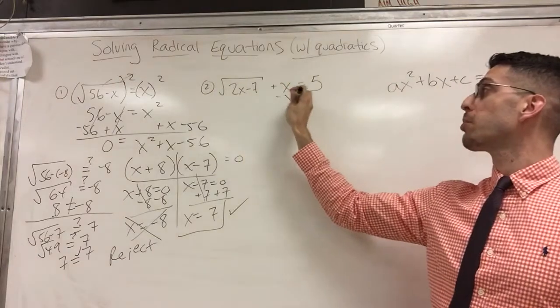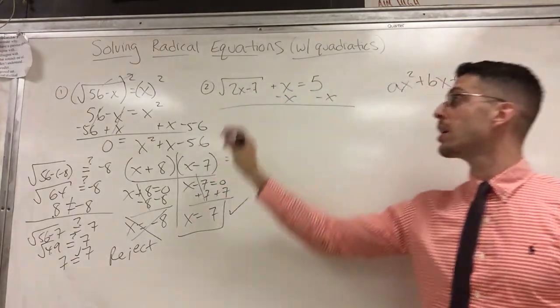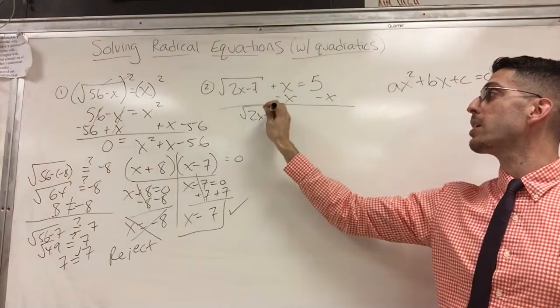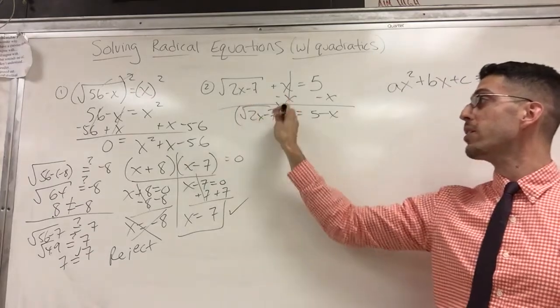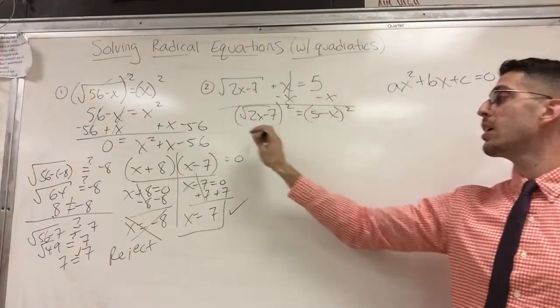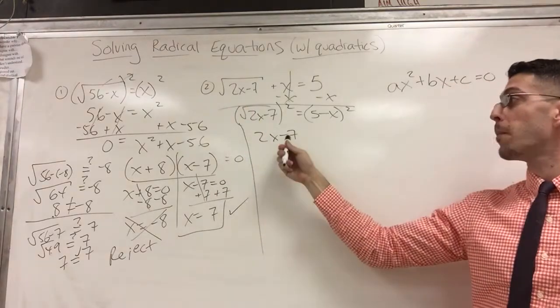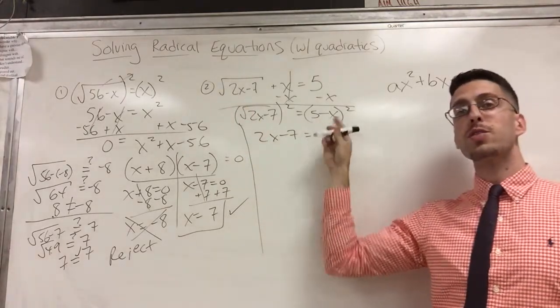Next, is the radical isolated? Oh no, it's not. So let's do it. So I'm going to bring my x over to the other side, and I got radical 2x - 7 = 5 - x. How do I get the radical out of there? I square both sides, and 2x - 7 drops down. Let me draw a line to separate.